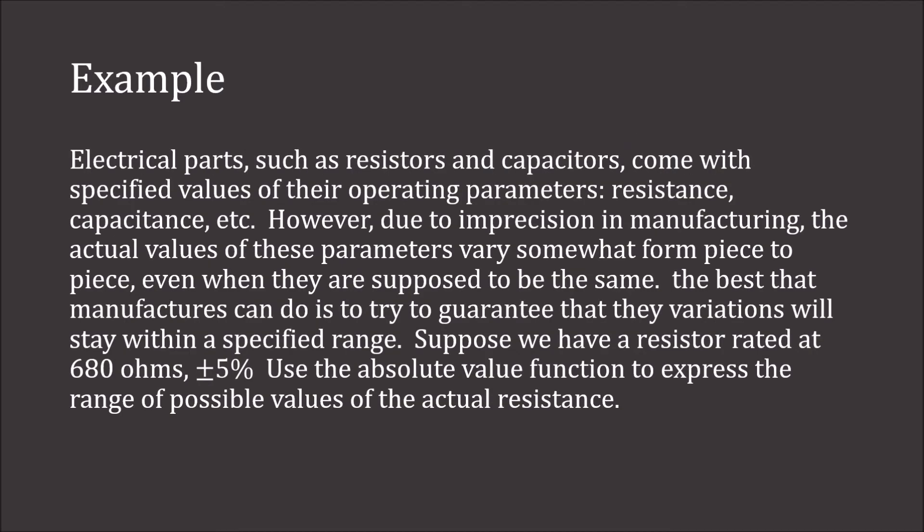Electrical parts, such as resistors and capacitors, come with specified values of their operating parameters — resistance, capacitance, etc. However, due to imprecision in manufacturing, the actual values of these parameters vary somewhat from piece to piece, even when they are supposed to be the same. The best that manufacturers can do is to try to guarantee that these variations will stay within a specified range. Suppose we have a resistor that is rated at 680 ohms plus or minus 5%. Use the absolute value function to express the range of possible values of an actual resistance.